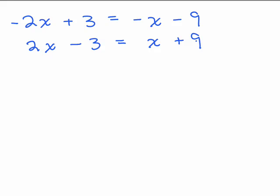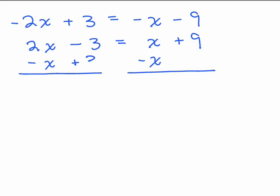See how that works? Then I have a positive in front of this 2x. Sometimes you can't get a positive in front of both of them, so that's going to depend on the situation. Now we can subtract x from both sides so that I have all the x terms on the left side of the equation. At the same time, let's get rid of this minus 3 by adding 3 to both sides. So I get 2x minus x is just x equals 12.